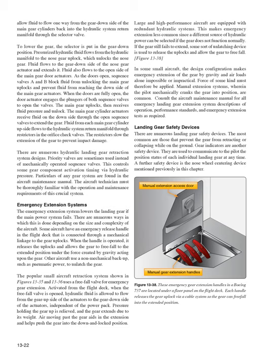Large and high-performance aircraft are equipped with redundant hydraulic systems, making emergency extension less common. If the gear still fails to extend, an unlatching device releases the uplocks and allows the gear to freefall. In some small aircraft, emergency extension by gravity and air loads alone is impossible or impractical, so manual extension systems wherein the pilot mechanically cranks the gear into position are common. Consult the aircraft maintenance manual for all emergency landing gear extension system descriptions, performance standards, and required tests.